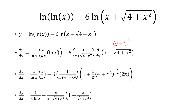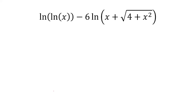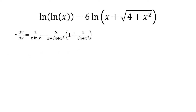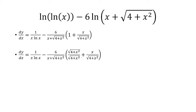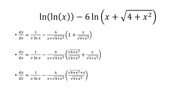And then we multiply the negative 6 with the 1 here. So at this point, the goal is to simplify. We're going to focus in the parentheses — rewrite 1 as the square root of 4 plus x squared over the square root of 4 plus x squared, then add those two fractions since they have a common denominator. Notice that these two terms are exactly the same, so they cancel. And so we're left with 1 over x times natural log of x, minus 6 over the square root of 4 plus x squared. And that is the derivative.